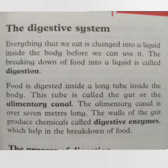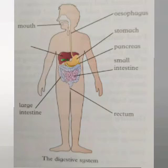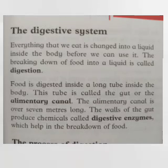Food is digested inside a long tube inside the body. This tube is called the gut or the alimentary canal. The gut is over 7 meters long. The walls of the gut produce chemical digestive enzymes which help in the breakdown of food.